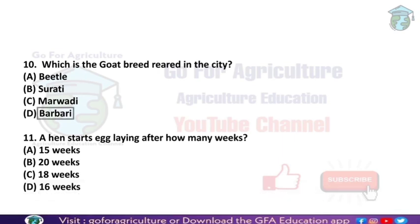Next: the hen starts laying eggs after how many weeks? At what age does it start laying eggs? When it is six months old it starts laying eggs. In terms of weeks, it starts laying between 15 to 25 weeks, so approximately 20 weeks. If in months, it is about six months old when it starts laying eggs.